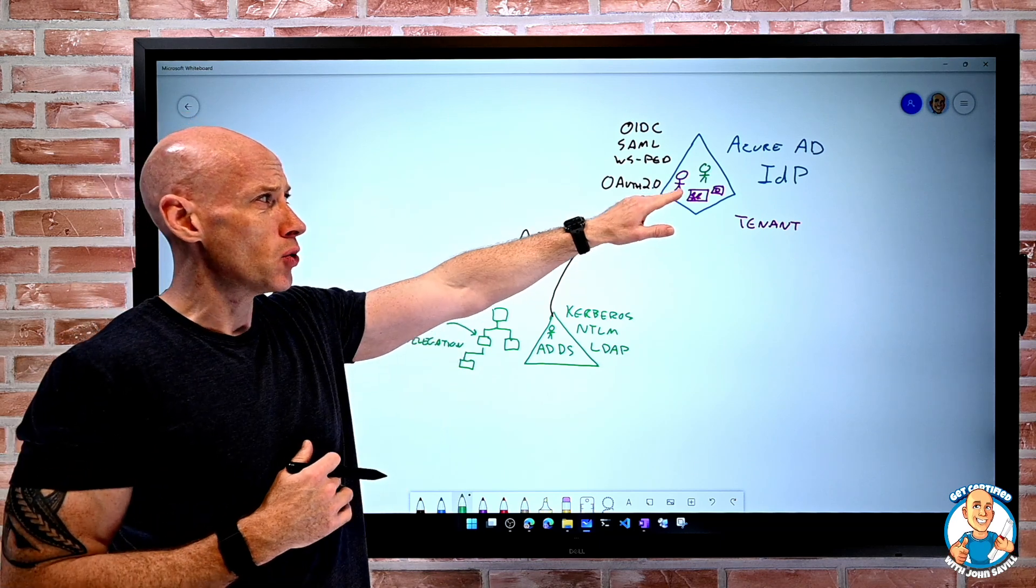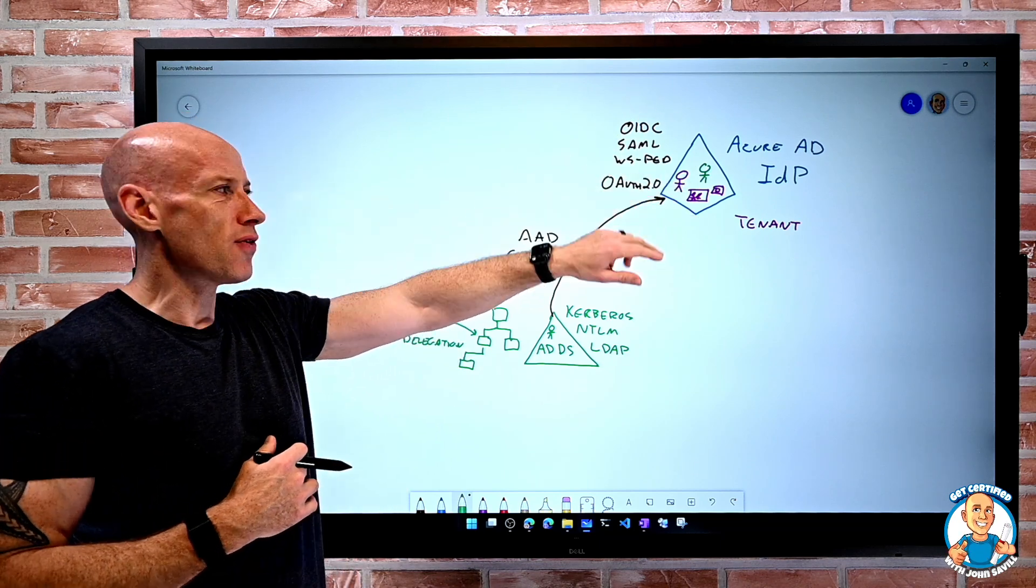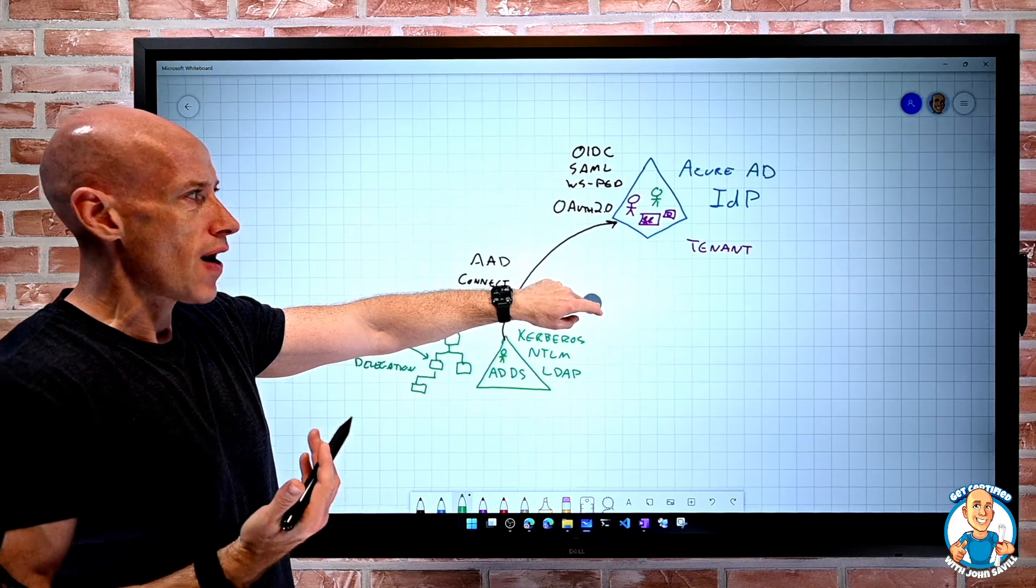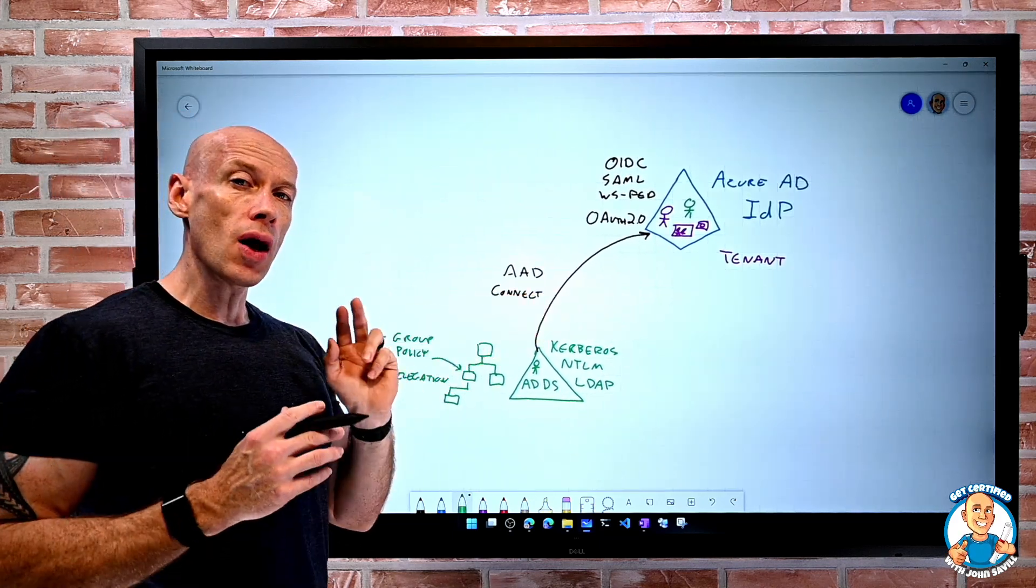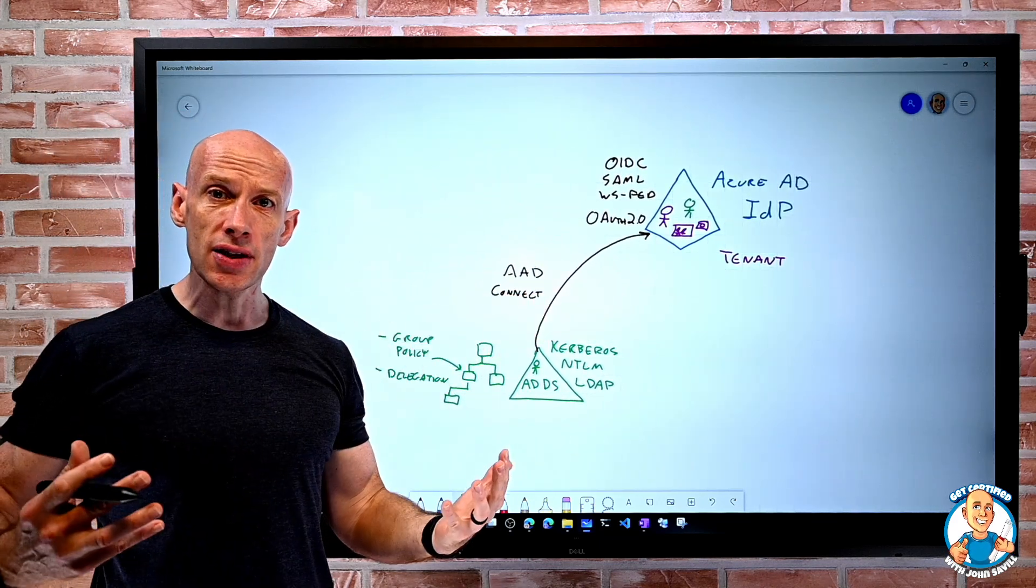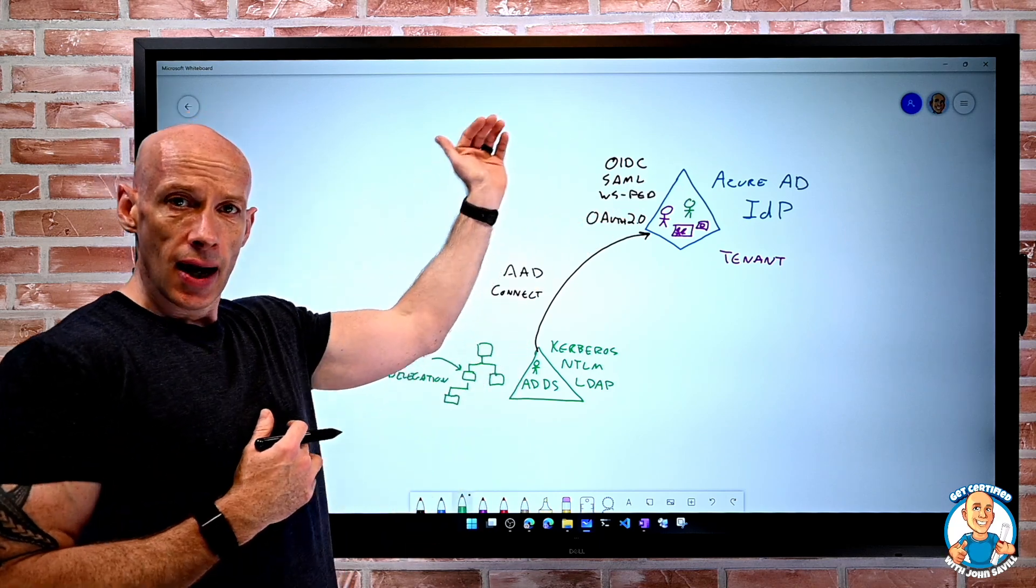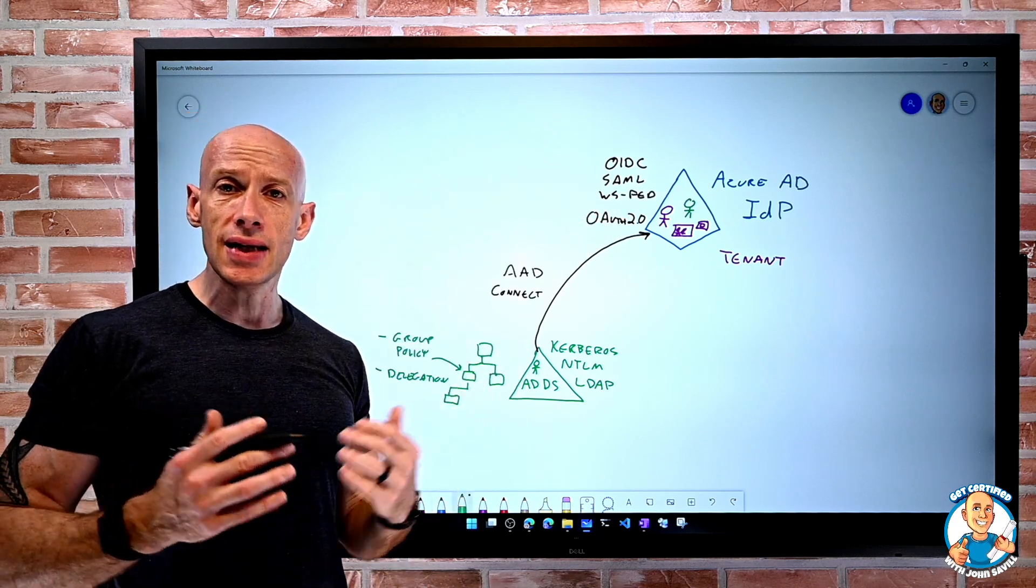In addition to users, groups, and devices, what's the true value? The whole idea is we have services that trust Azure AD for authentication and authorization.